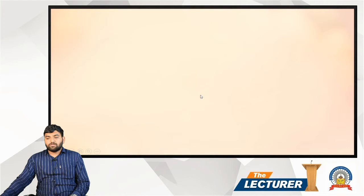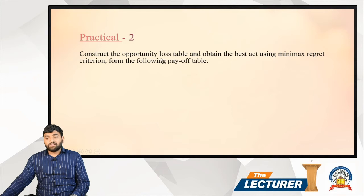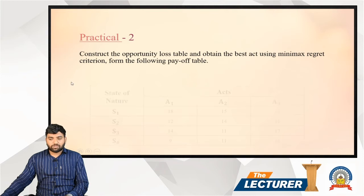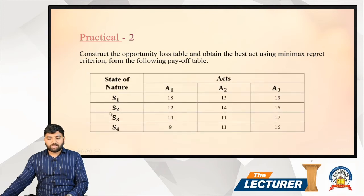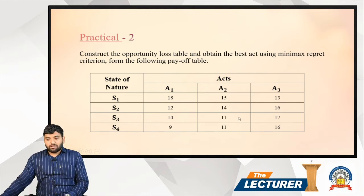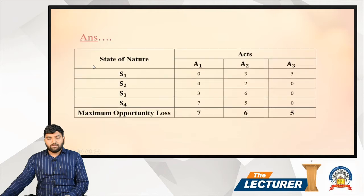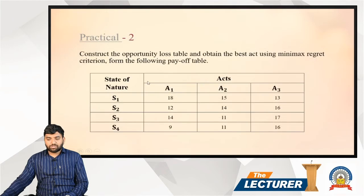Practical question number two: construct the opportunity loss table and obtain the best act using the minimax regret criterion from the following payoff table. We have a payoff table with states of nature, and we will build the opportunity loss table from it.